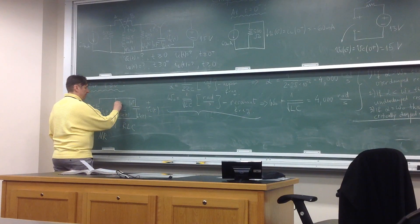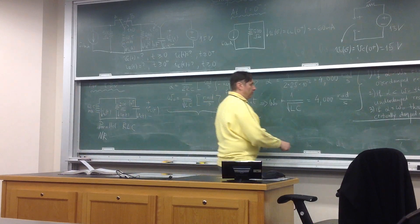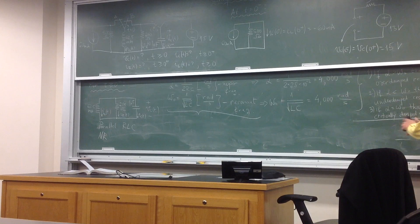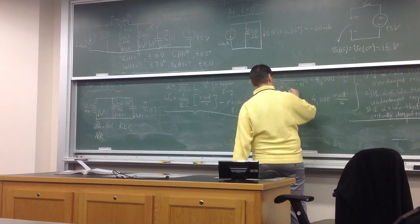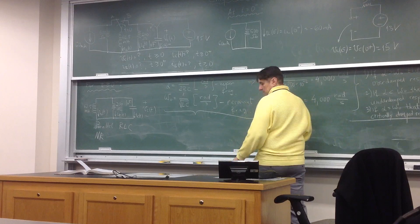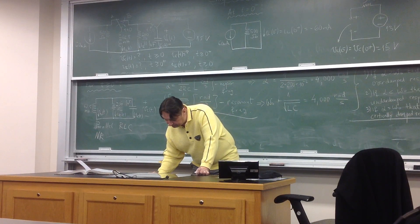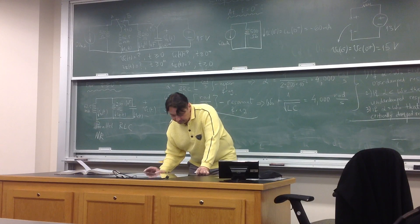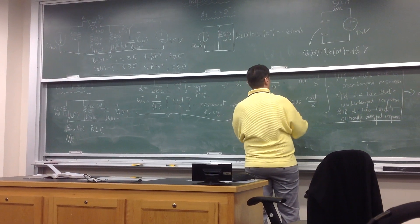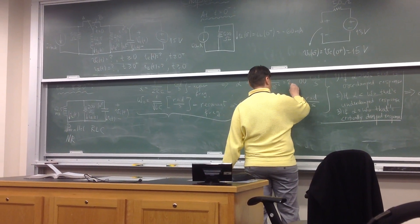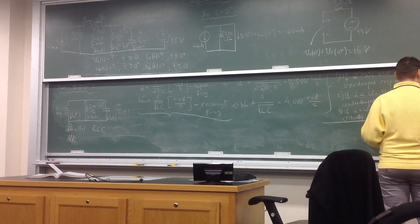Right. So in this case, it becomes 200 ohms here, which gives you that alpha is 2500 now. So it's 2500. So alpha is smaller than omega zero, which is the underdamped case.